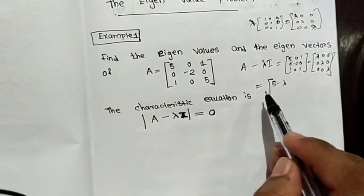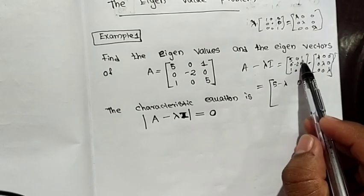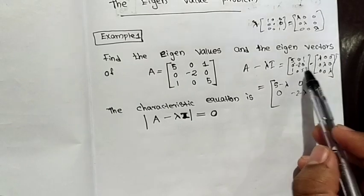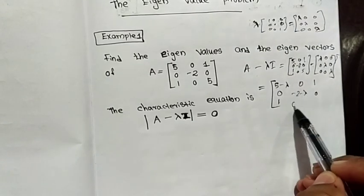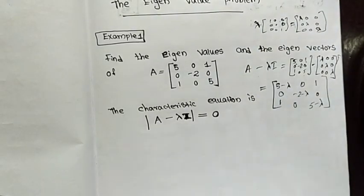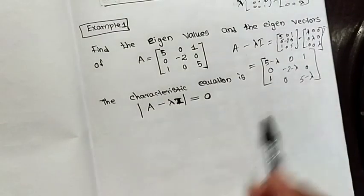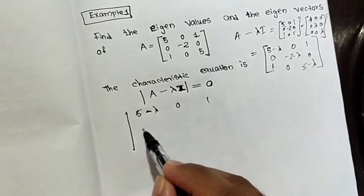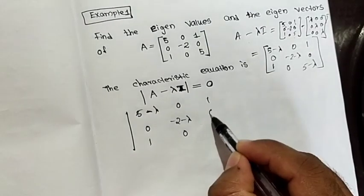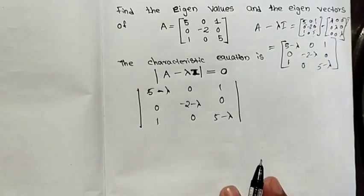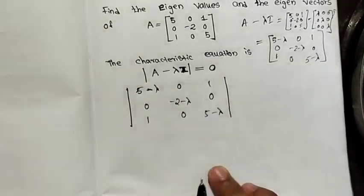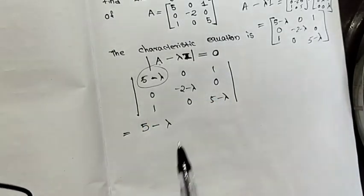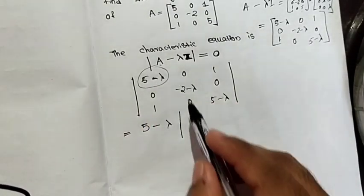So we get 5 minus lambda on the diagonal. The resulting matrix is: 0, 0, 0; 0, 1; 0, minus 2 minus lambda, 0; 0, 5 minus lambda. We need to take the determinant of this and set it equal to zero.